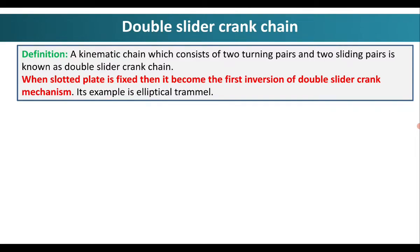What is double slider crank chain? The definition states that a kinematic chain which consists of two turning pairs and two sliding pairs is known as double slider crank chain. It is called double slider crank chain because it consists of two turning pairs and two sliding pairs.